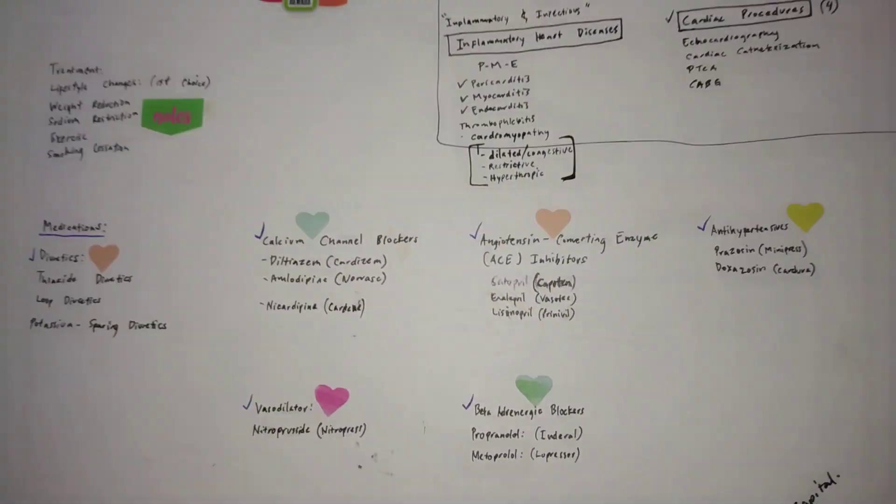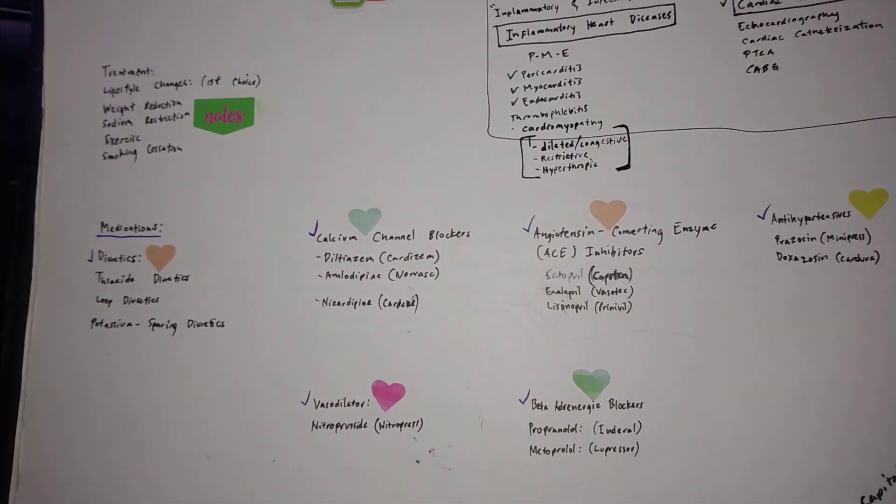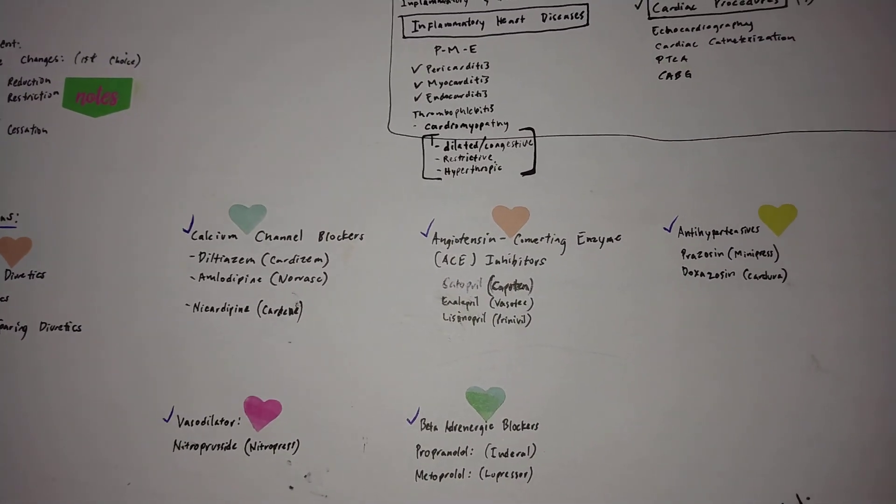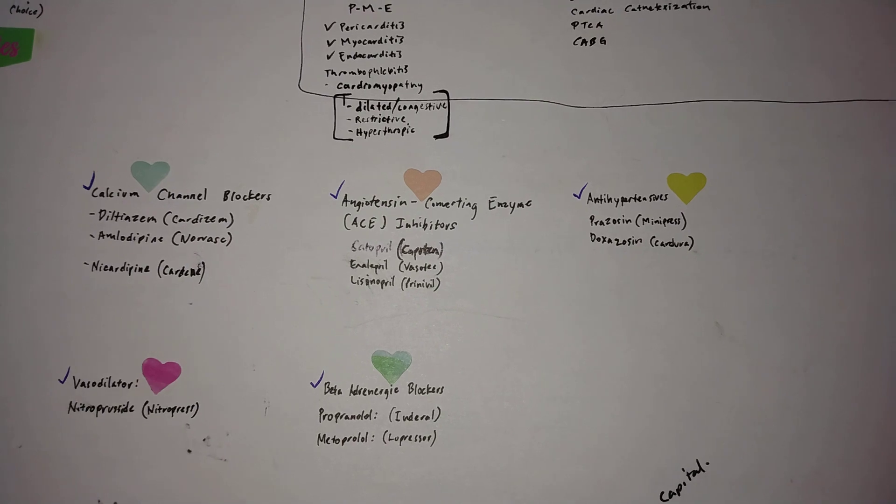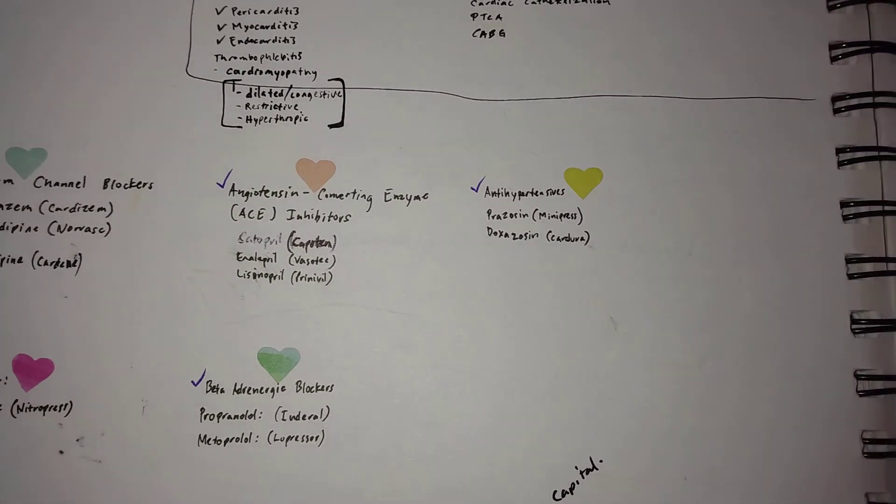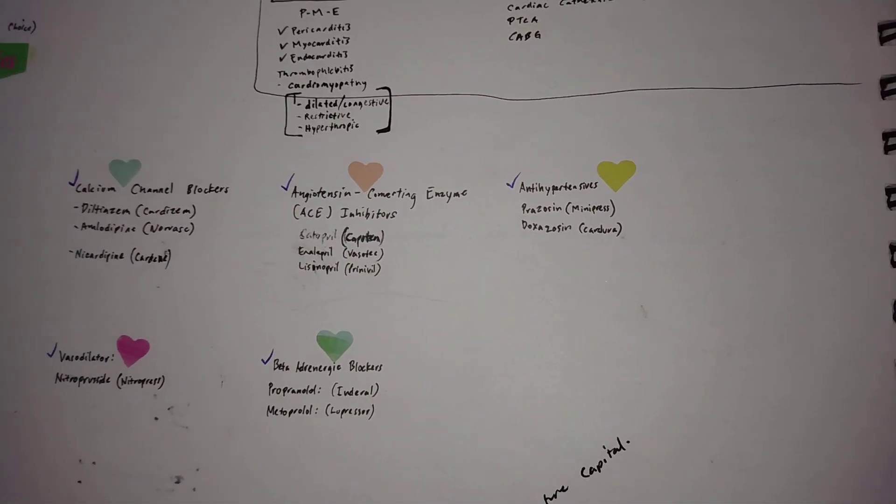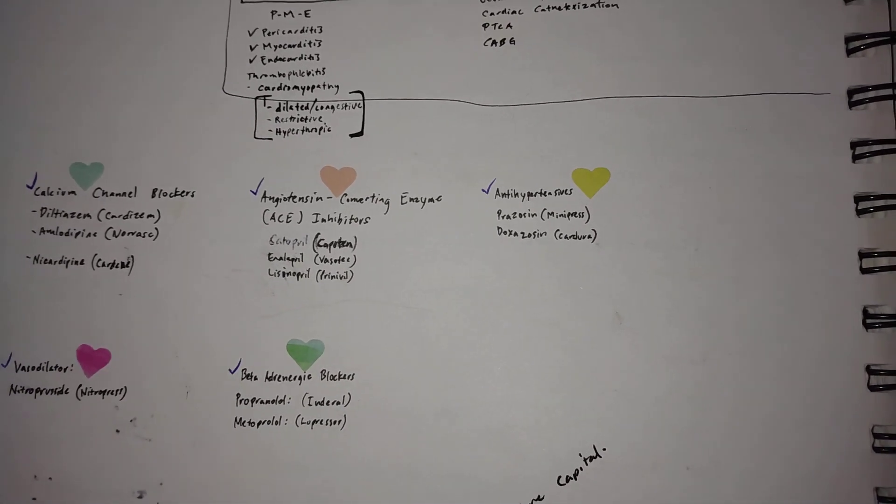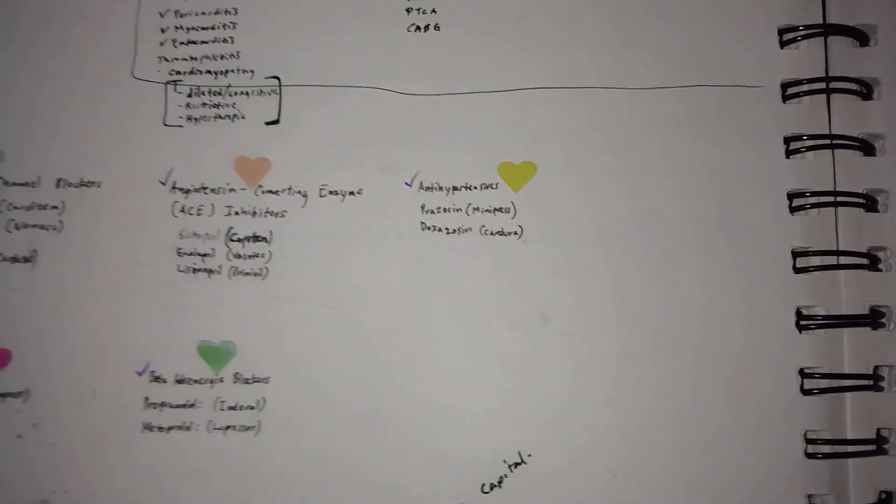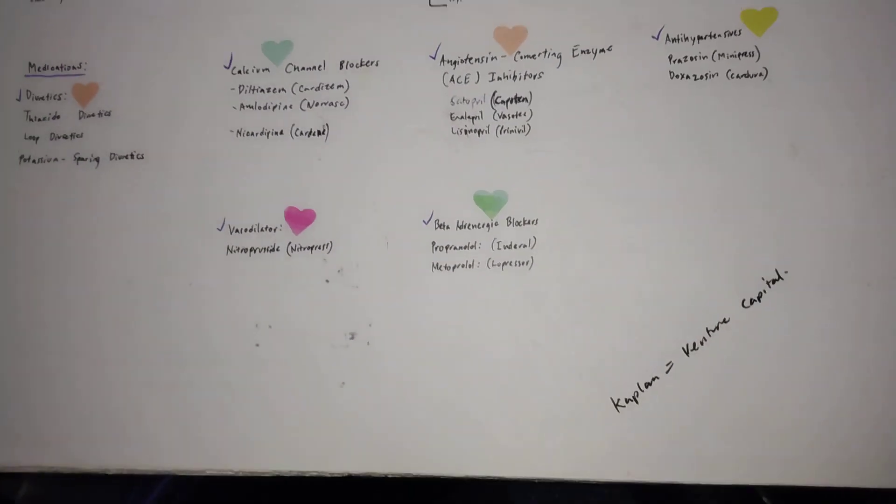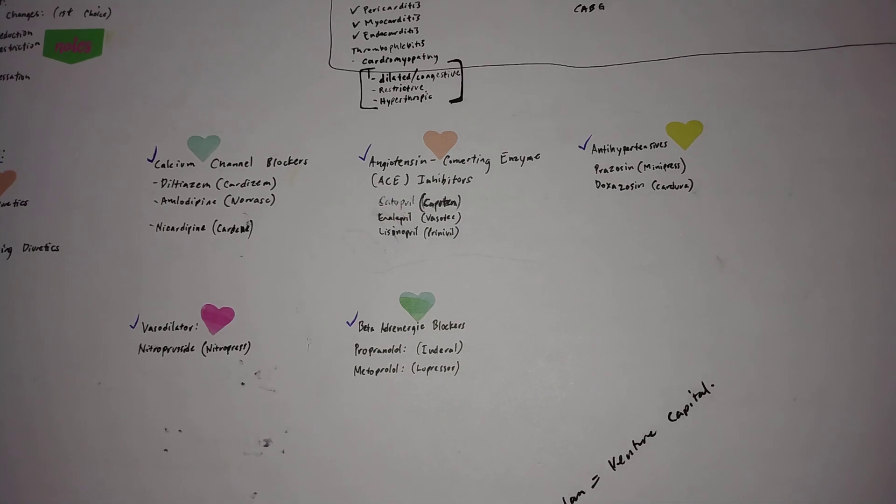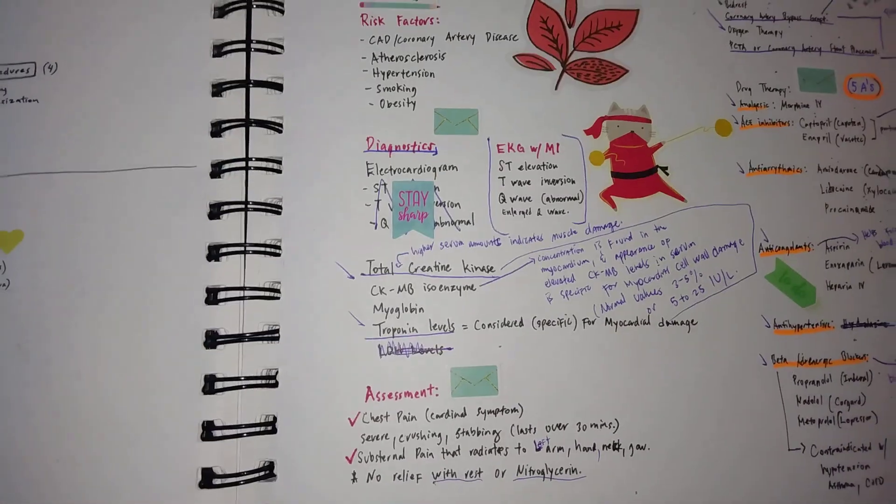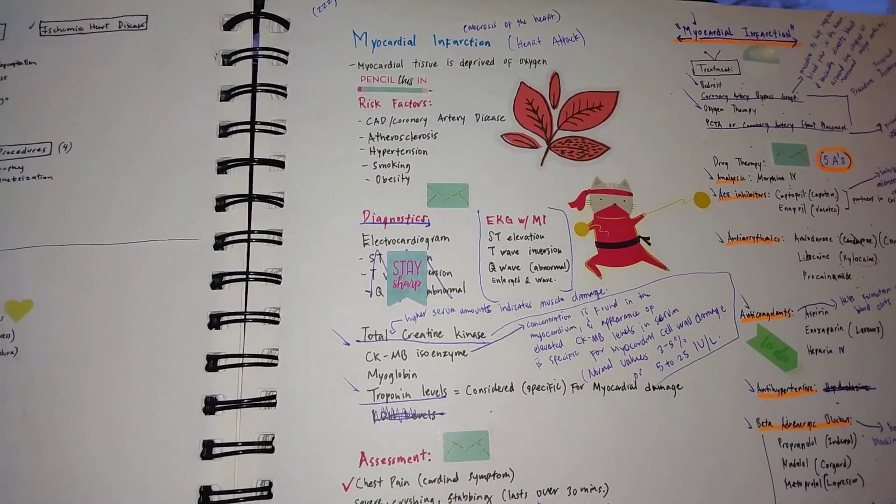I did previously also go over the cardiac medications, the most common classifications: your diuretics, your calcium channel blockers, your ACE inhibitors or angiotensin converting enzyme inhibitors, and your antihypertensives, and also your vasodilators and your beta-adrenergic blockers.